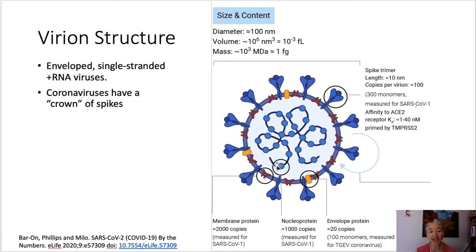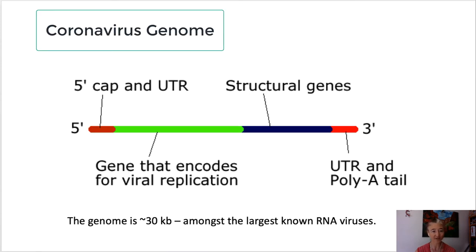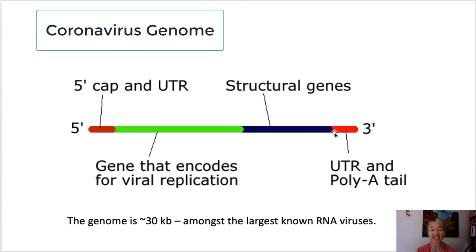Let's look at the genome — the positive-sense RNA. We have both DNA and RNA inside of us, but coronaviruses only have RNA. Just like our mRNAs, it has a 5-prime cap and a 3-prime poly-A tail. That poly-A tail is really a protective structure because there are enzymes like Pac-Man enzymes that chew from the 3-prime ends, so they have to chew through a lot of A's before they can get to the important genes.